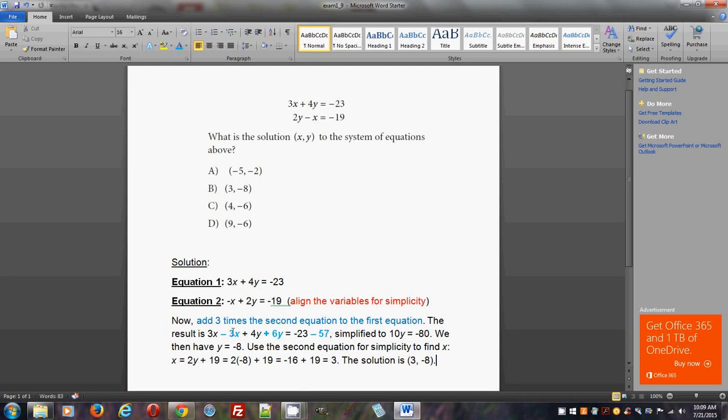Minus 3x plus 6y, and negative 19 times 3 is negative 57. So you add both equations in this expression. And this simplifies to 10y equals negative 80. You just have to perform correct algebra on both sides. And you arrive at 10y equals negative 80.